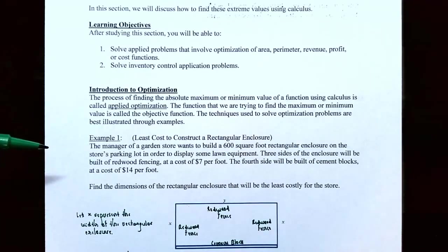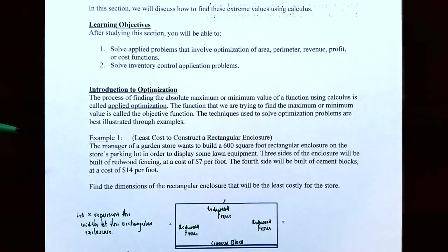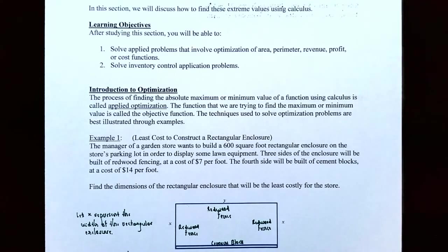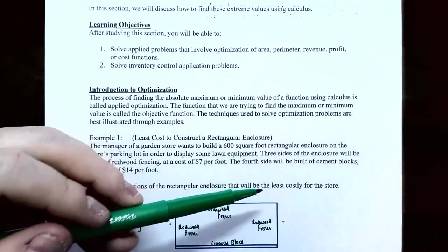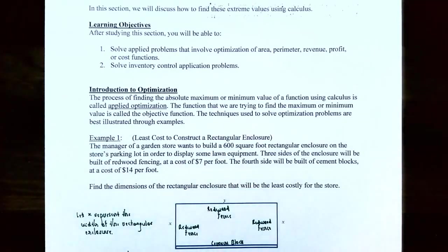The manager of a garden store wants to build a 600 square foot rectangular enclosure on the store's parking lot in order to display some lawn equipment. Three sides of the enclosure will be built of redwood fencing at a cost of $7 per foot, but the fourth side will be built using cement blocks at $14 per foot. Find the dimensions of the rectangular enclosure that will be the least costly for the store.